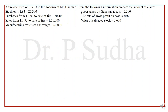The next question: a fire occurred on 1/1/93 in the godown of Mr. Ganesan. From the following information, prepare the amount of claim. Stock on 1/1/93 is Rs. 25,300. Purchases from 1/1/93 to date of fire: Rs. 50,400. Sales from 1/1/93 to date of fire: Rs. 1,56,000. Manufacturing expenses and wages: Rs. 60,000. Goods taken by Ganesan at cost: Rs. 2,500. Rate of gross profit on cost: 30%. Value of stock saved: Rs. 3,600.